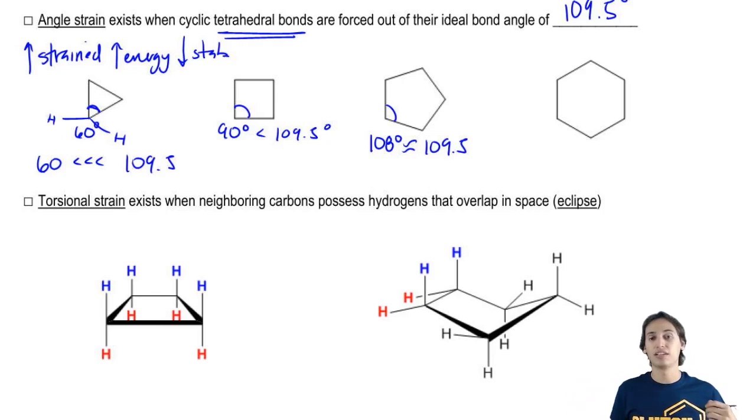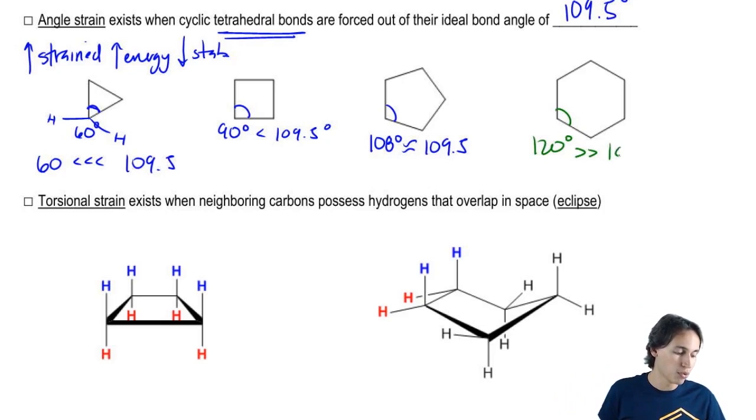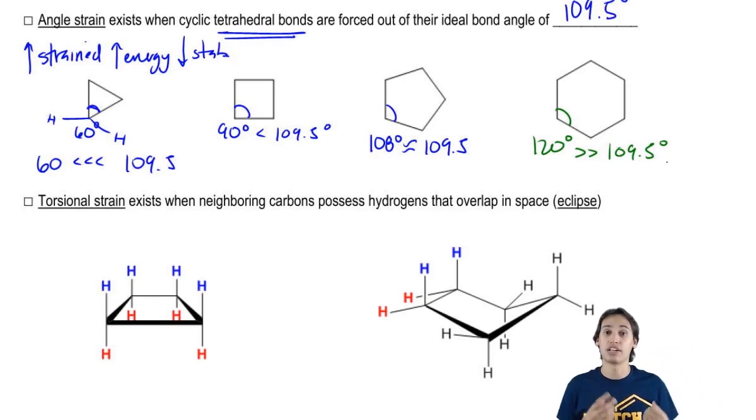Then let's look at finally a six-membered ring. A six-membered ring would actually have bond angles of 120 degrees if it was drawn, if it actually existed in this planar form. Well, 120 degrees is way more than 109.5, so I would expect that a cyclohexane would actually be less stable than cyclopentane, but actually it turns out to not be true.